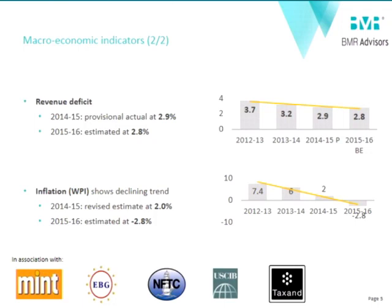The revenue deficit has similarly moved down from 2.9 to 2.8 in FY15-16. Inflation, which has been a bugbear for the Indian economy for the last decade, has shown a welcoming declining trend. The WPI revised estimate for 2014-15 was 2%; in 2015-16, it has gone negative at -2.8%, dragged down by commodity and oil price slippages. The consumer price index for 2016-17 is expected to be a reasonable 4.5%. Most macroeconomic indicators have been quite reassuring as we walk into the next year.